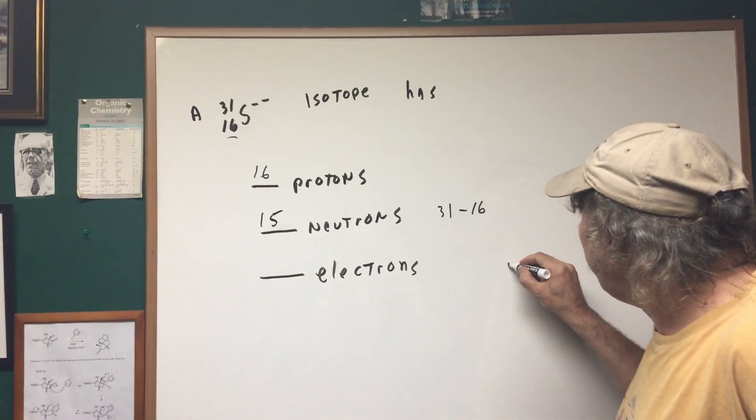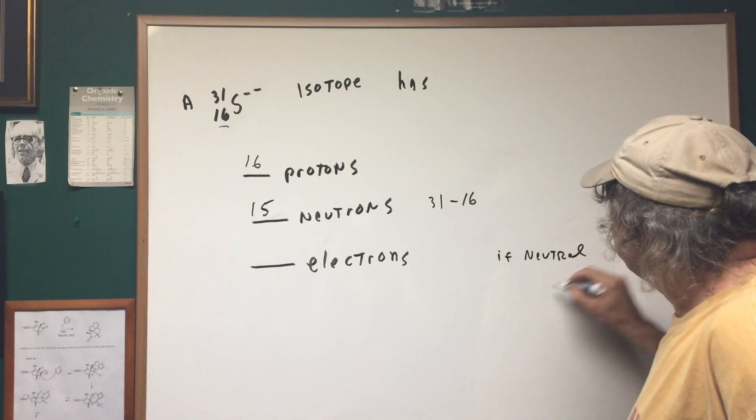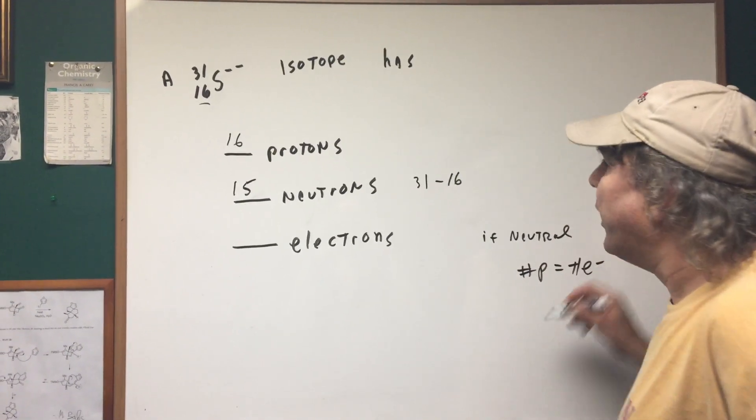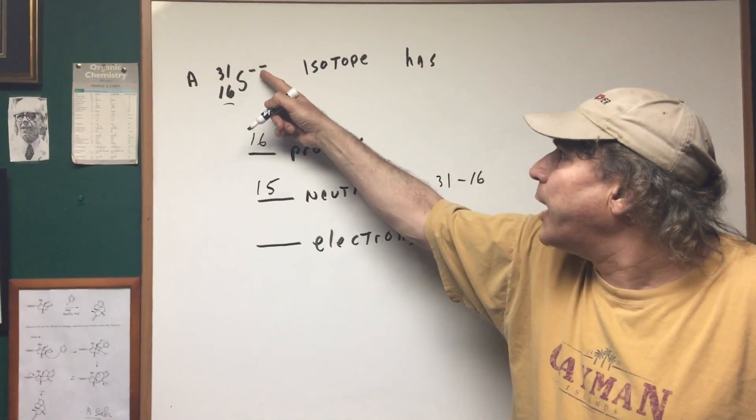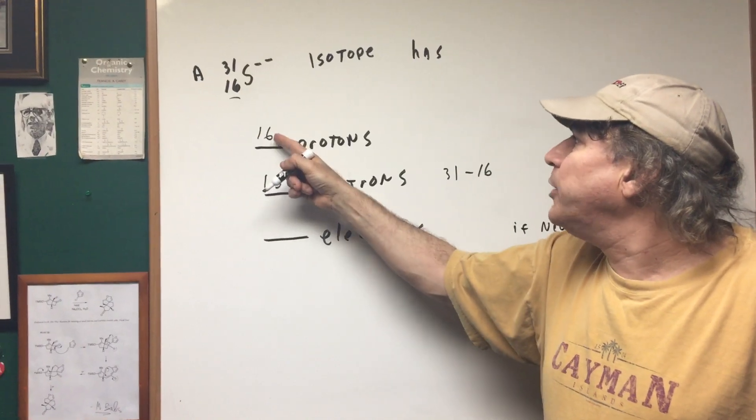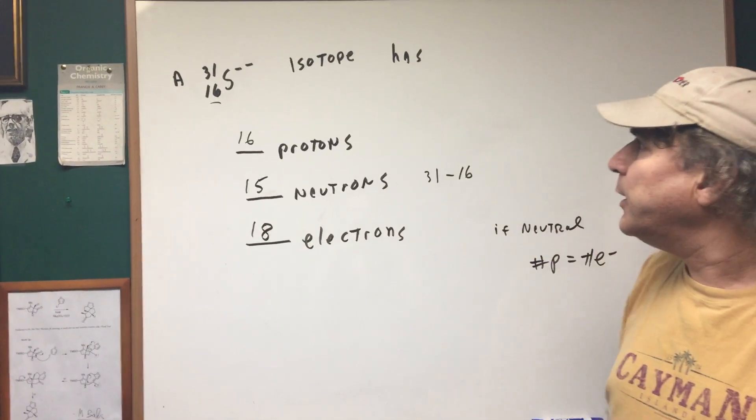And finally, if something is neutral, the number of protons equals the number of electrons. But this is not neutral. This means it's got two additional electrons. So that means you're going to add two to here, and this would give 18 electrons.